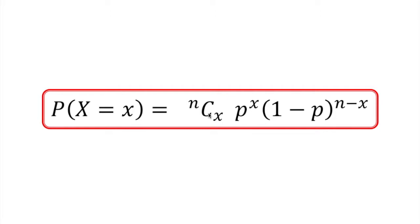We're going to look at the binomial distribution probability formula, as seen here, and we're going to derive this. Now, it looks quite complicated, but I'm going to show you a way of thinking about it that makes it seem very intuitive.